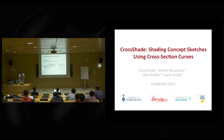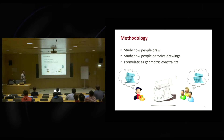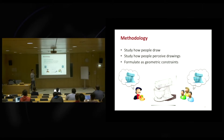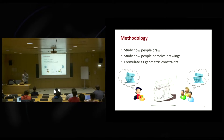CrossShade was published in 2012, a collaboration with people from Toronto and Vancouver. I'll use it to illustrate a methodology we've applied in several similar problems: we study how people draw but also how people interpret and perceive drawings, because the two are tightly related. Typically people draw to communicate information to others, so they learn drawing techniques that match well the way our brain perceives drawings. Based on those two sources — the drawing literature and the perception literature — we can deduce geometric constraints suitable for optimization.